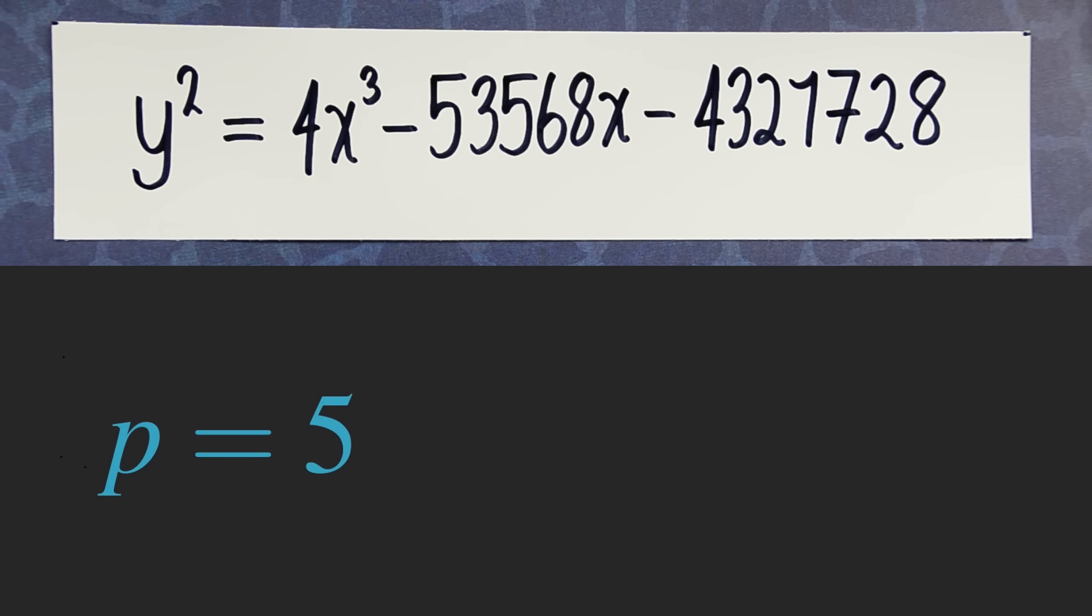That is, if you substitute x equals 4 and y equals 1, you'll see that the two sides are congruent mod 5.